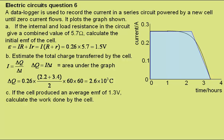Part C. If the cell produced an average EMF of 1.3 volts, calculate the work done by the cell.